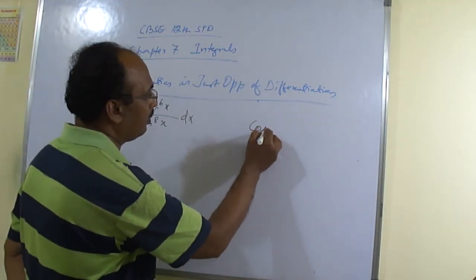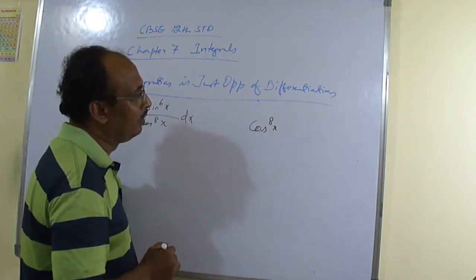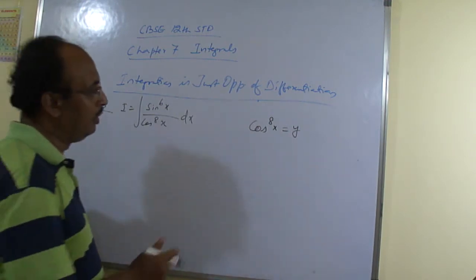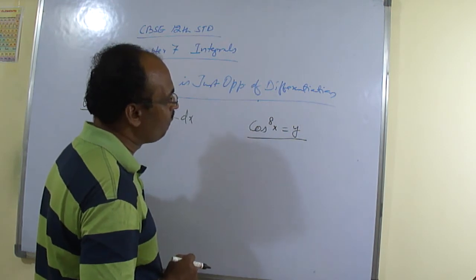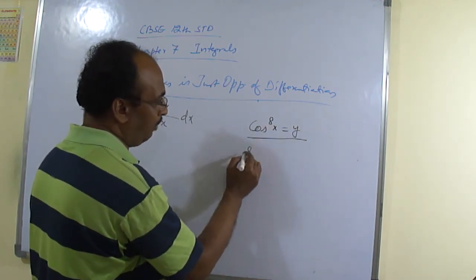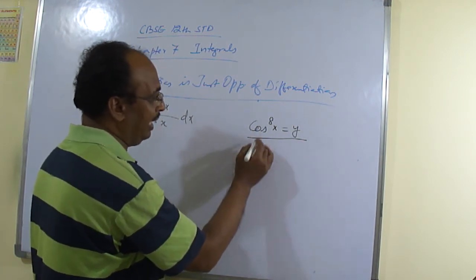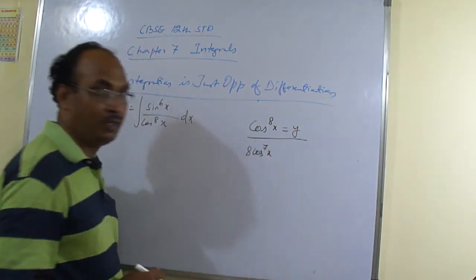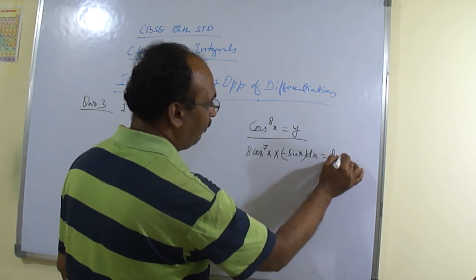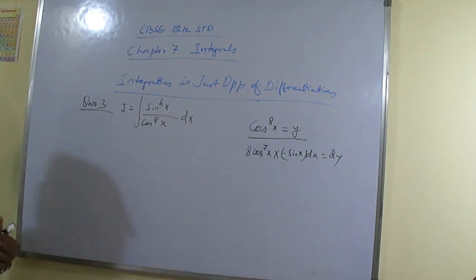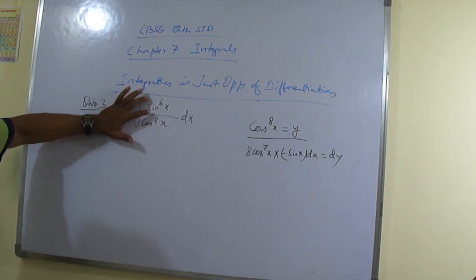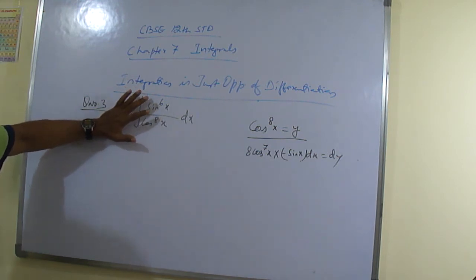Suppose we try the substitution cos⁸x = y. If we differentiate this, we get 8·cos⁷x · (−sin x) dx. But this is not solving our purpose, because our manipulation should be in such a way that we should be able to substitute the numerator part — sin⁶x should come out from the derivative.